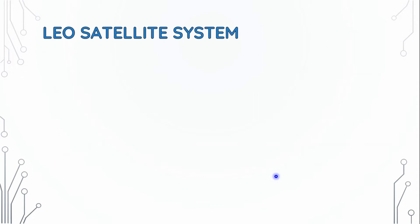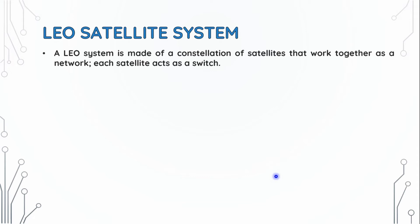The LEO satellite system is made of a constellation of satellites that work together as a network. Each satellite acts as a switch.